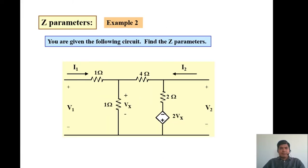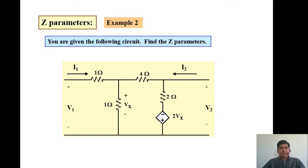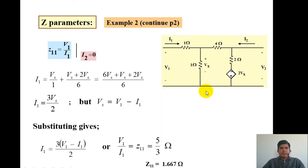Now let us take an example in which there are dependent sources present in the circuit. In this circuit we have a voltage-dependent voltage source. We assume the same port conventions: V1 is voltage at port 1, I1 is current incoming from port 1, V2 is voltage at port 2, and I2 is current incoming from port 2. To find Z11 we calculate the V1 to I1 ratio when port 2 is open-circuited, so I2 equals 0.